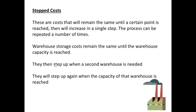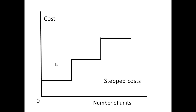We also have something called step costs. Step costs stay the same until you reach a certain point, and when you reach that point the cost will suddenly jump in a single step, and that process can be repeated a number of times. For example, if you've got warehouses used for storage, the fixed cost remains the same until the warehouse is filled. If you suddenly need a second warehouse, you get a step up in the fixed costs. Those fixed costs then remain the same until the capacity of that warehouse is reached. If we plot costs against number of units, you can see why we call them stepped.